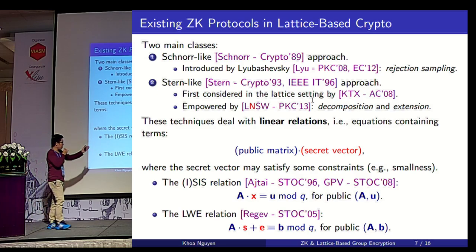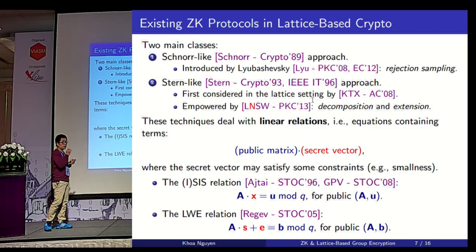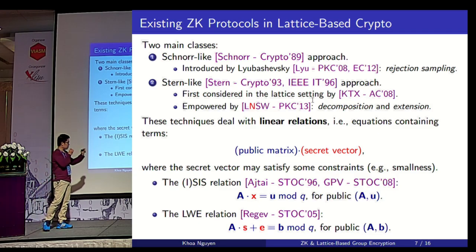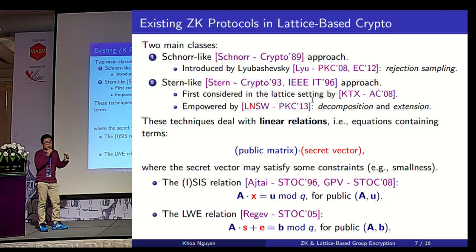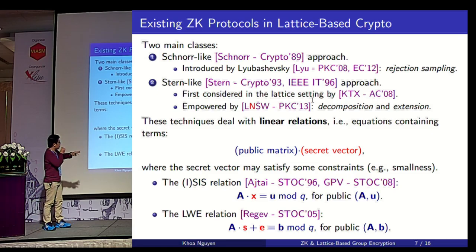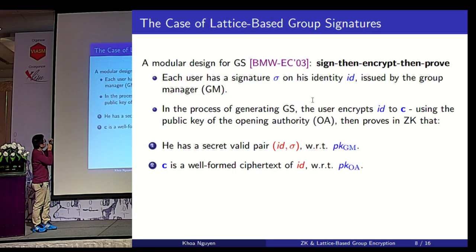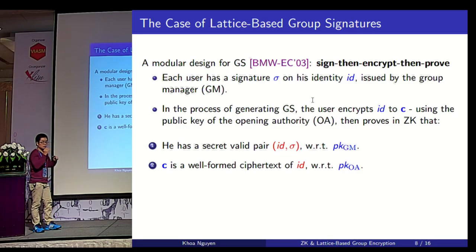In the SIS relation, we have an equation A times X equals U mod Q, where matrix A and vector U are public and the secret vector X is small. The LWE relation is represented by the equation A times S plus E equals B, where matrix A and vector B are public, vector E is a small secret noise, and the secret S may also be small. This also holds for encryption schemes based on LWE and signature schemes based on SIS problems. Now let me go back to the context of lattice-based group signatures and see how these techniques work well for group signatures.